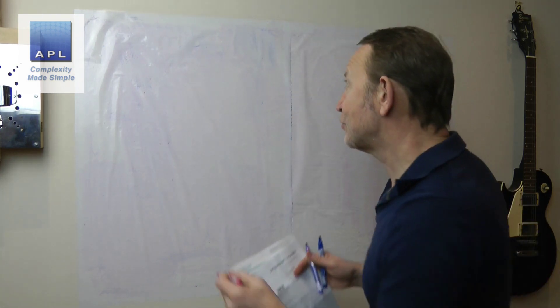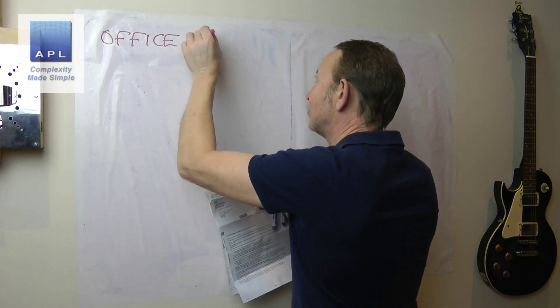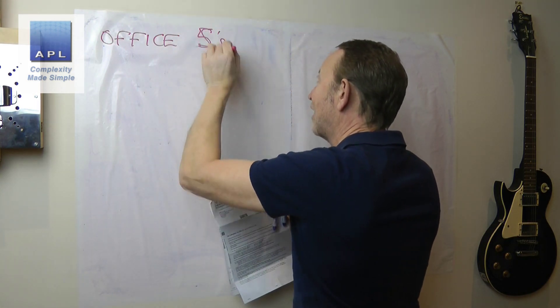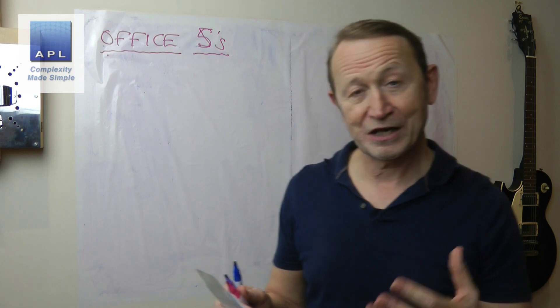Now let's get on with today's video. In this video we're going to have a very quick look at office 5S. This is one of the areas where I see more damage done to businesses than any other area, and of course as we move away from manufacturing in the UK and other countries, more of us are working in offices doing transactional-type processes.